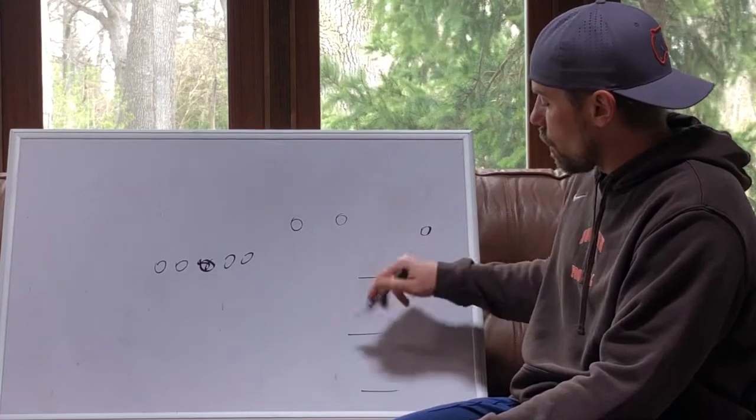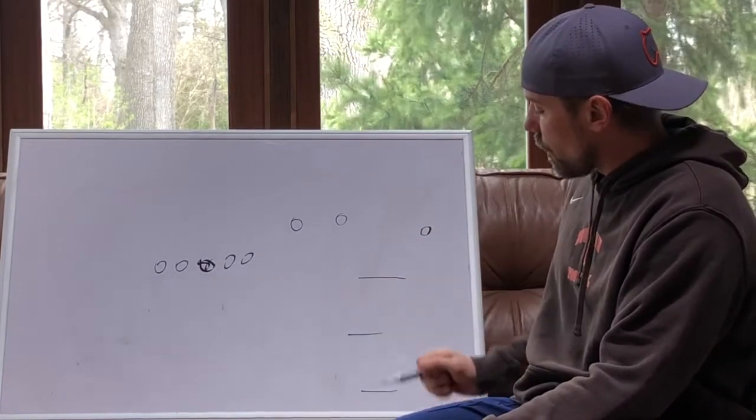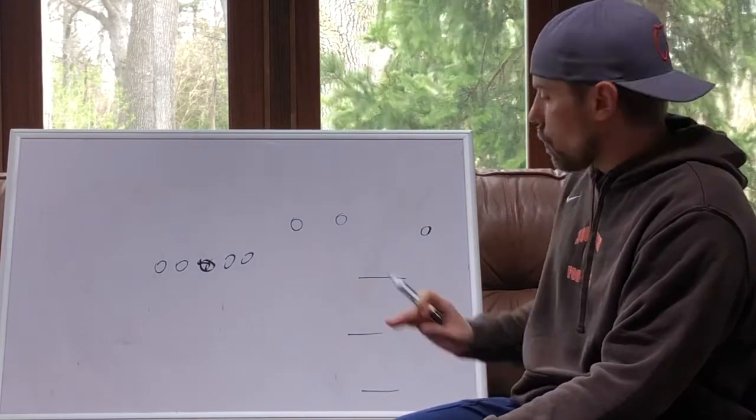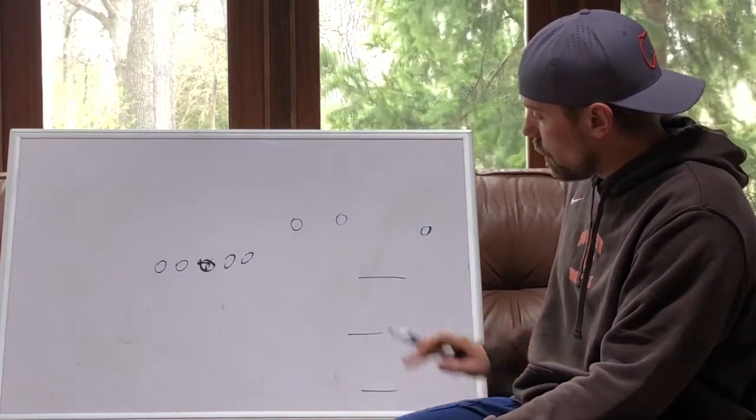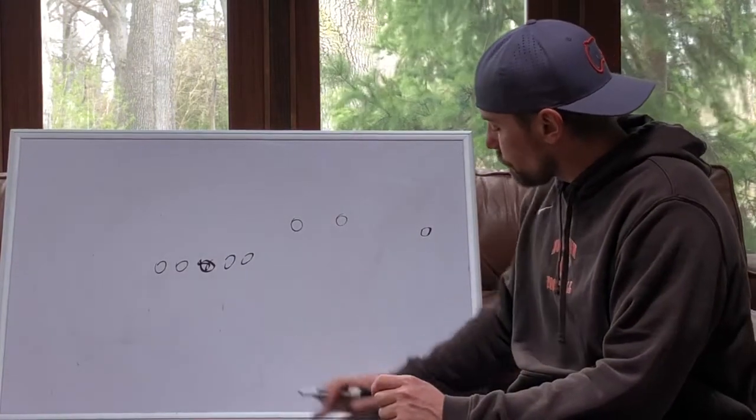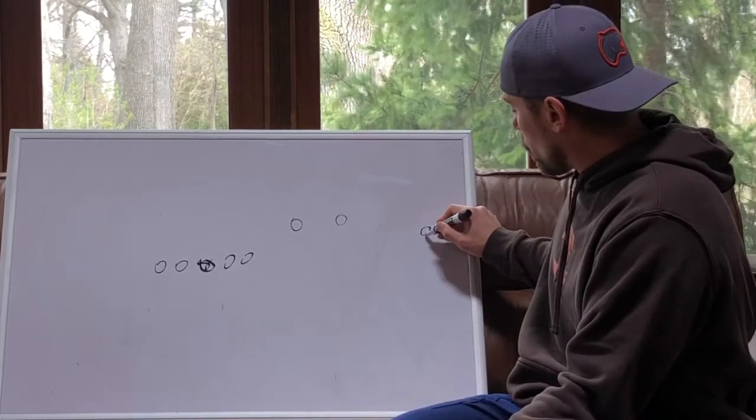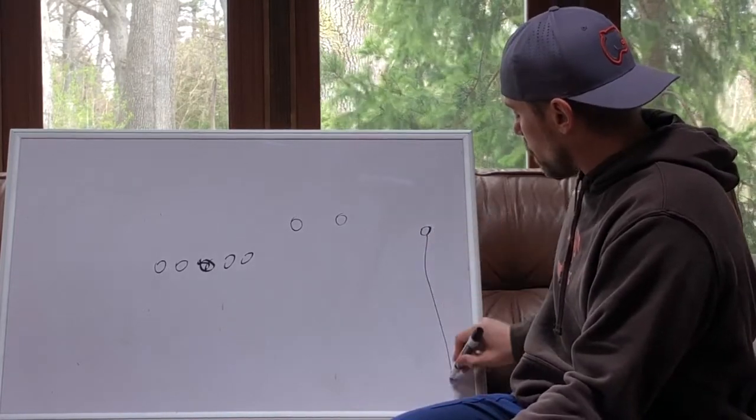But regardless, I'm creating three layers on this defense. This is what we call vertically layering the defense. We're creating layers vertically that pose problems for that defense. Another thing we could do is, and that would be something like a flood, a simple flood concept.